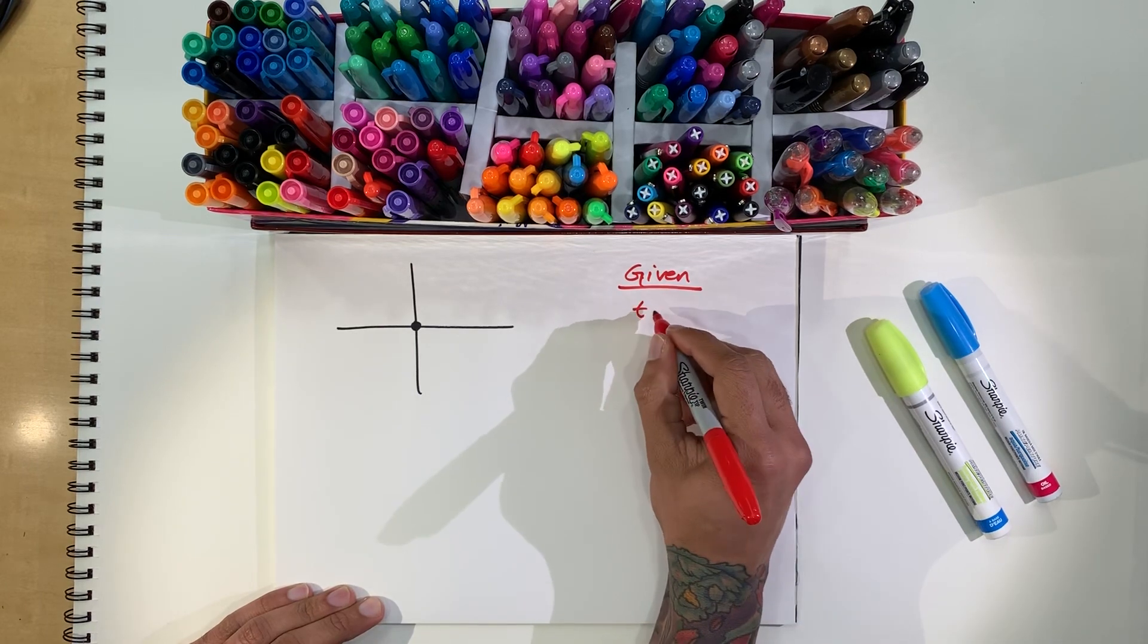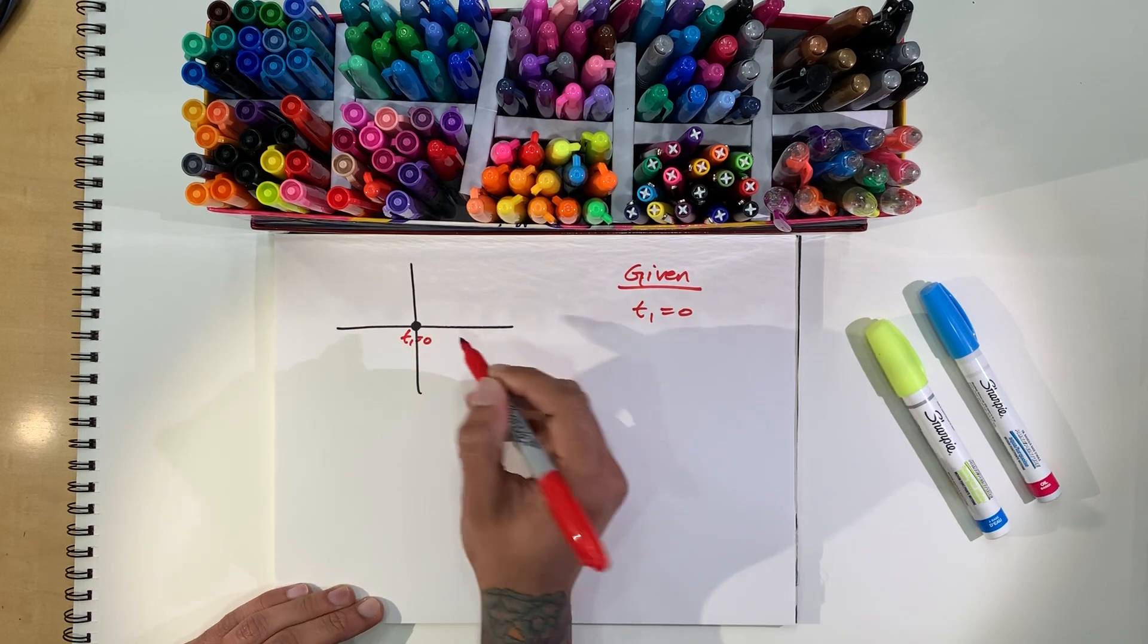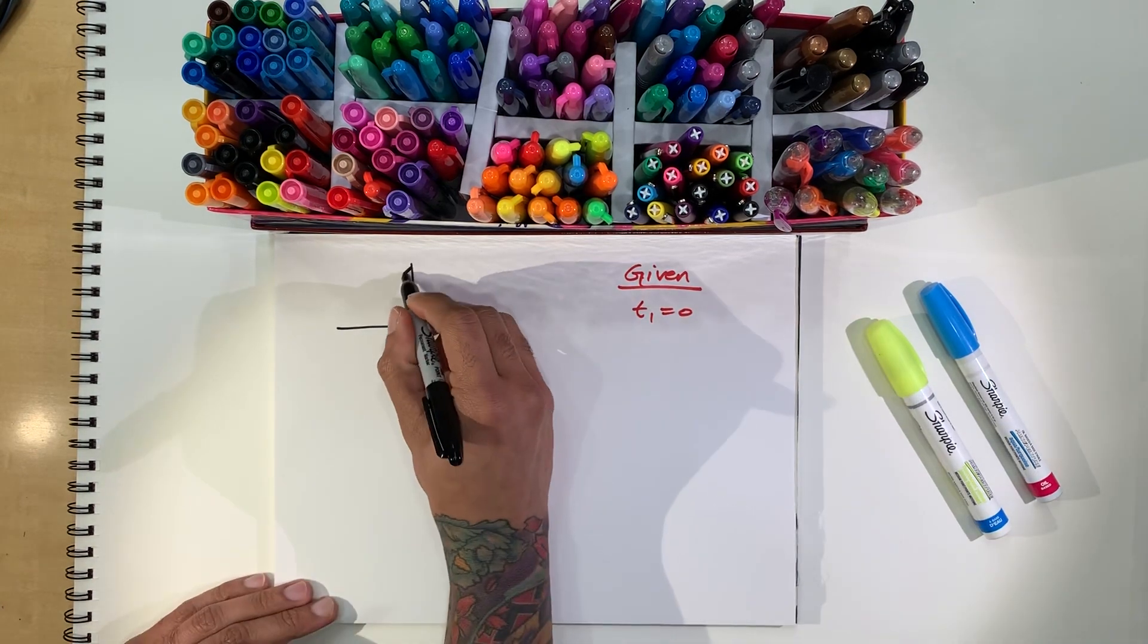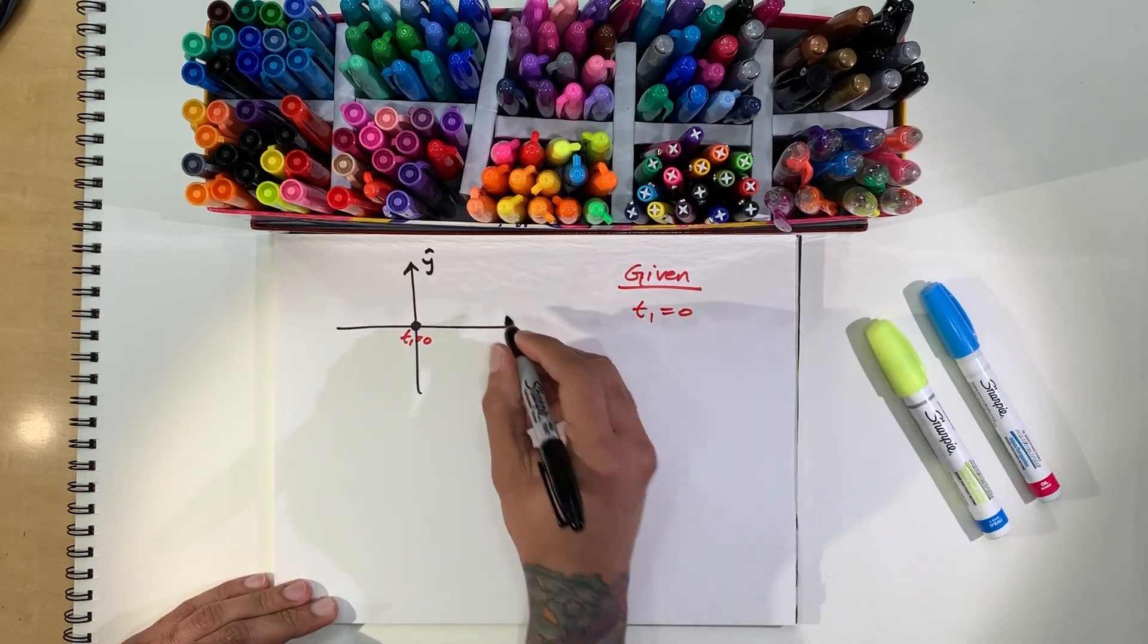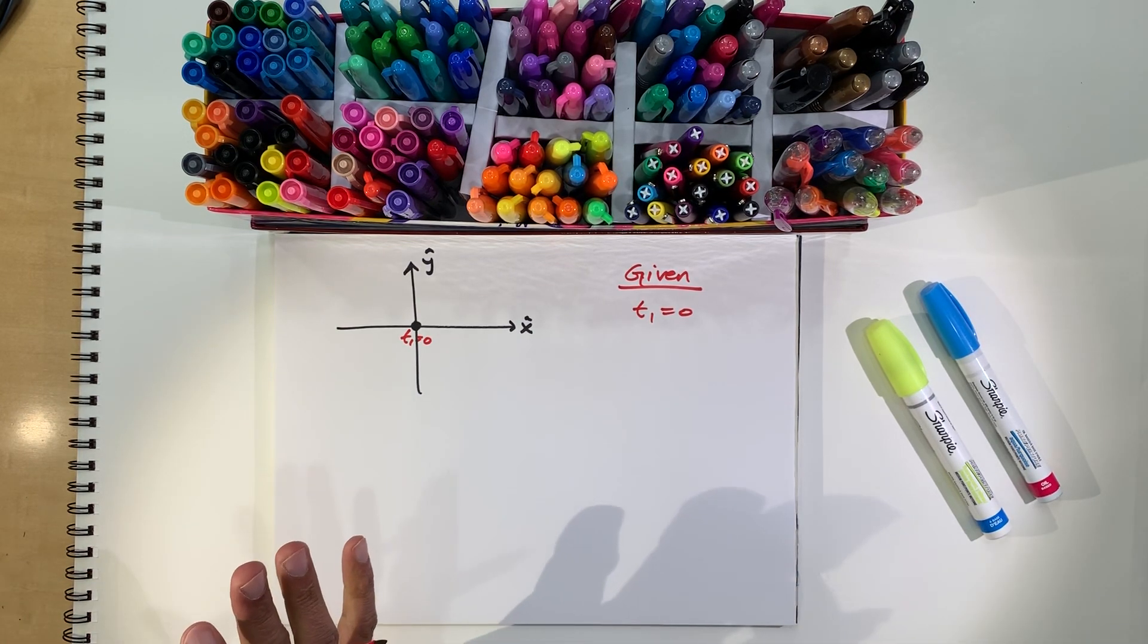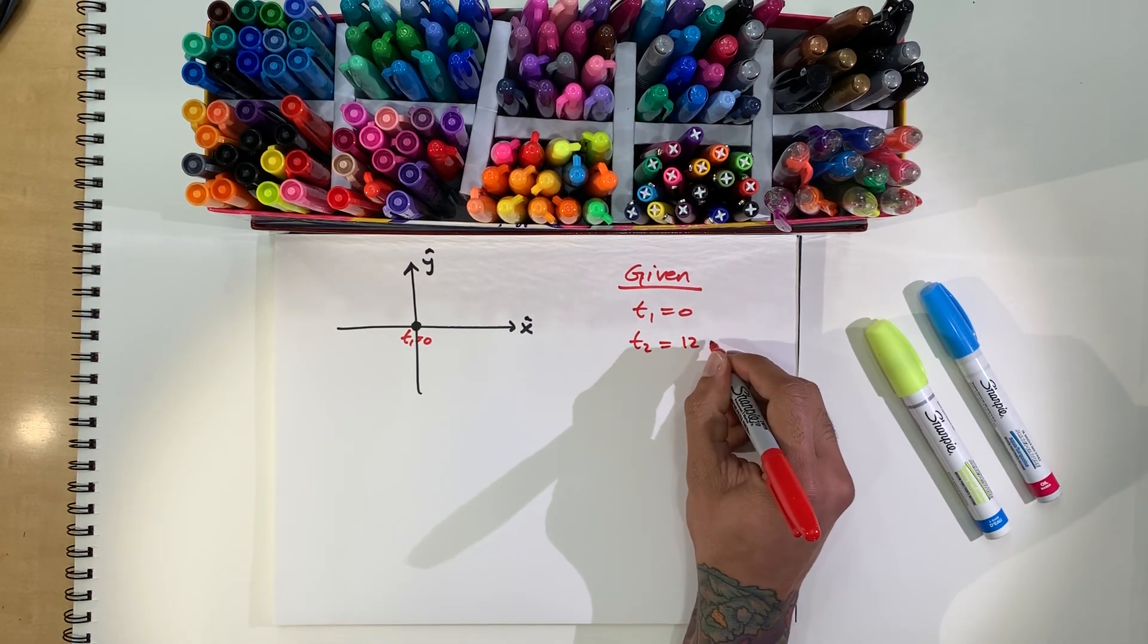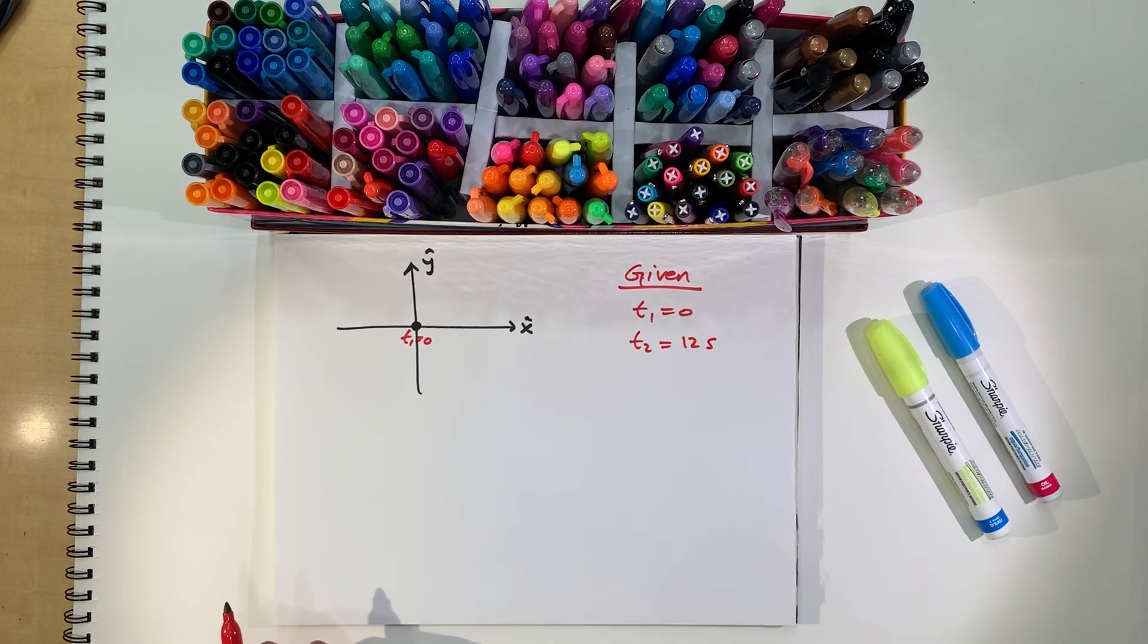So, we have at t1, right, the rhino is here. This is t equals 1. And we have a coordinate system, which is y direction and the x direction. All right, and so for the interval, from t equals 1 to t equals 2 is 12 seconds. So, we know that t equals 2 is 12 seconds. All right.